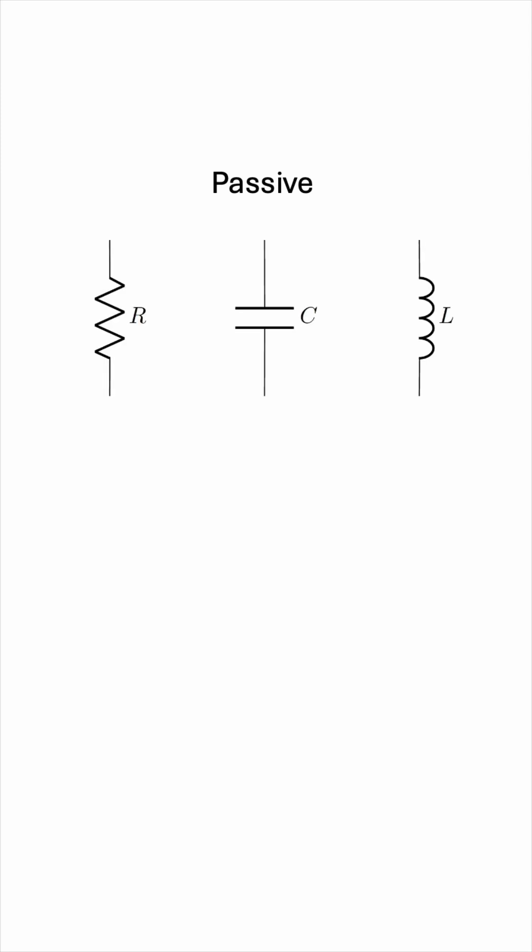Passive elements are not capable of generating energy. These include resistors, capacitors, and inductors. Those either dissipate energy, as in the case of the resistor, or store it, as in the case of the capacitor and inductor. No batteries, no amplifiers — just managing energy that's already there.